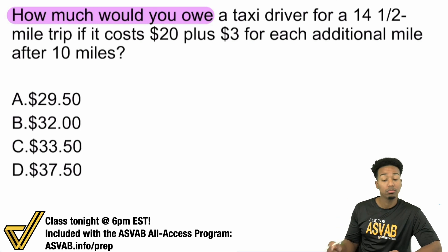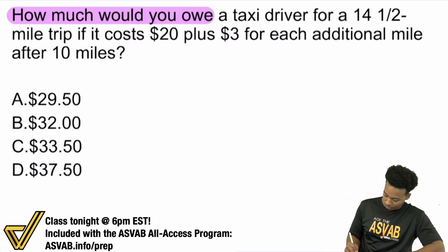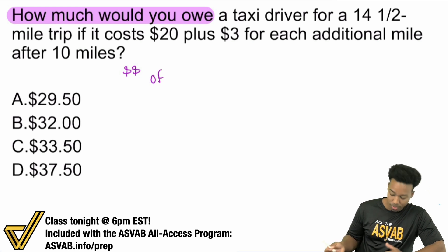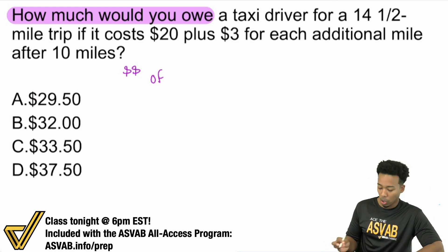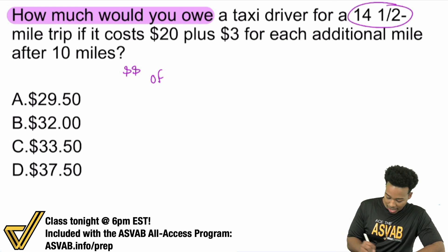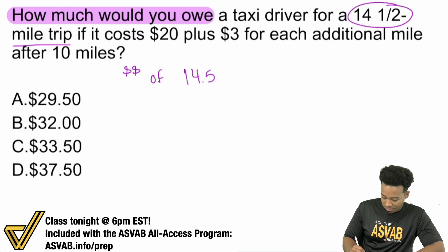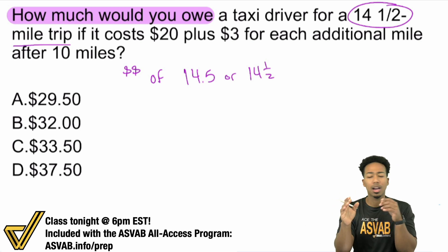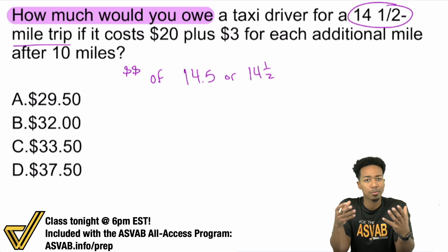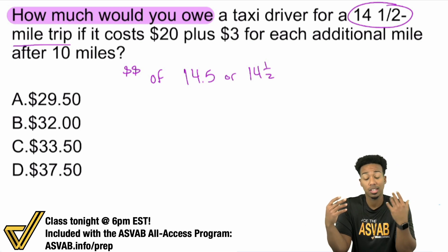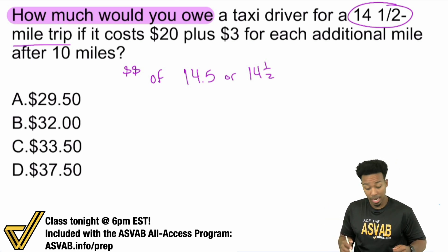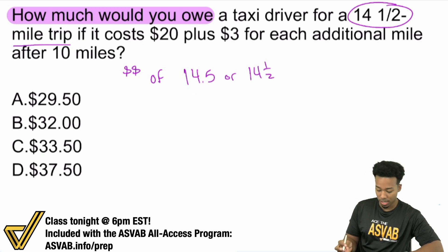How much would you owe — that's the charge, the money, that's what we're looking for. We're looking for money. So the cost of the trip. Now, we're told that this trip is 14 and a half miles — I'll write 14.5. I'm not going to focus on all of the information until I know what it means. First off, I want to know how much I would owe — the charge, how much would it cost — and then we know that it's a trip of 14.5 miles.